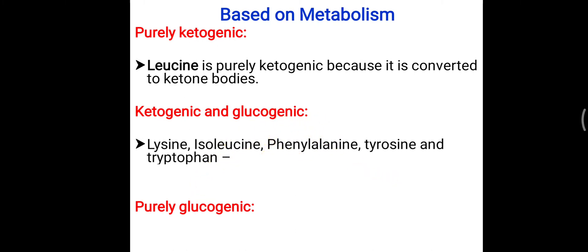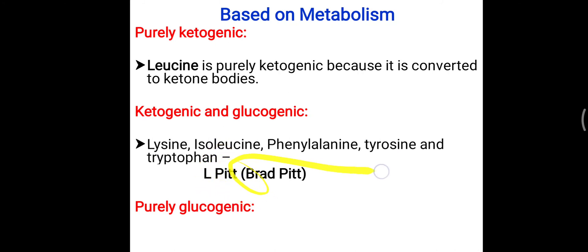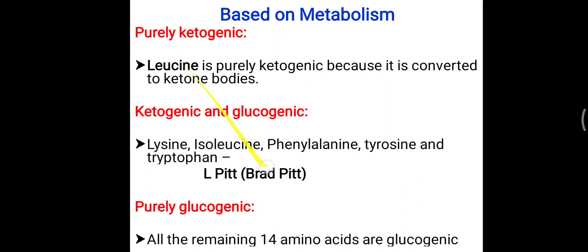To remember these, use the mnemonic 'L Pitt' — like Brad Pitt, the famous American actor who can play any character. L stands for lysine, P for phenylalanine, I for isoleucine, T for tyrosine, and T for tryptophan. So leucine is purely ketogenic, and the L Pitt group is both ketogenic and glucogenic. That removes 6 of the 20 amino acids total.